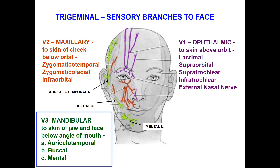Summary: the ophthalmic division covers the skin above the orbit via lacrimal, supraorbital, supratrochlear, infratrochlear, and external nasal branches. So above the orbit is the ophthalmic division; below the orbit is the maxillary division; and for the skin of the jaw and face below the angle of the mouth, that is the mandibular division.